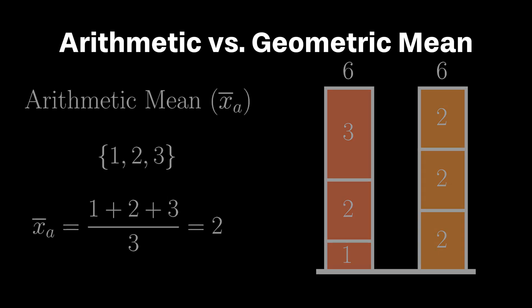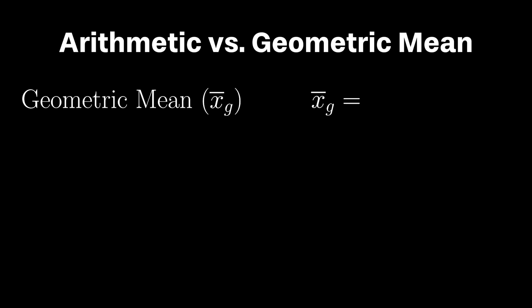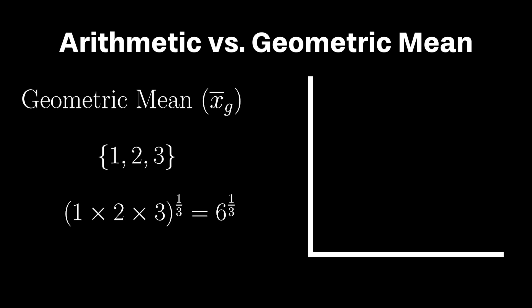Now the geometric mean is computed quite differently. With n observations, we multiply or take the product of each observation and raise it to the 1 over n. In the case of 1, 2, and 3, the geometric mean would be 6 raised to the 1 third. So unlike the arithmetic mean, the geometric mean answers a different question. Specifically, if all observations took on the same value, what value would be needed to achieve the same product? In this case, 1 times 2 times 3 equals 6, and 6 to the 1 third multiplied 3 times together also yield 6.